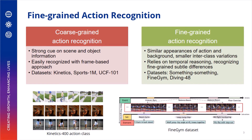Recognizing actions in video is fundamental and important for video understanding. Action classes in coarse-grained datasets such as Kinetics 400 generally have strong cues on scene and object information, which can be easily recognized using a frame-based approach. On the other hand, fine-grained datasets such as FineGym have similar appearances of action and background, where the inter-class variations are smaller. It relies more on temporal reasoning in order to recognize the fine-grained subtle differences.